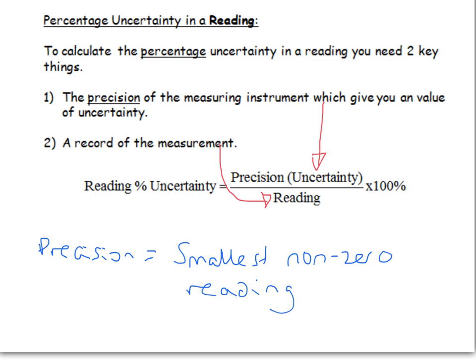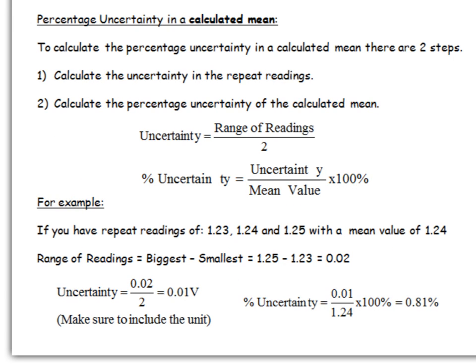I'll look at an example of this and the other type of uncertainty at the end of this video. But I'm going to move on to look at percentage uncertainty in a calculated mean. It's a little bit different to calculating it for a single measurement, but not too much different.